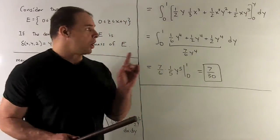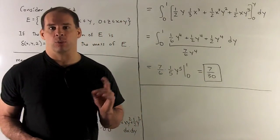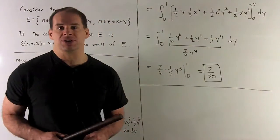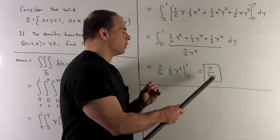Now all we have left is y. So single variable calc: add one, flip it over. You have (1/5)y⁵. Put in one, put in zero, take the difference. That gives you one-fifth times your original seven-sixths, gives you 7/30.